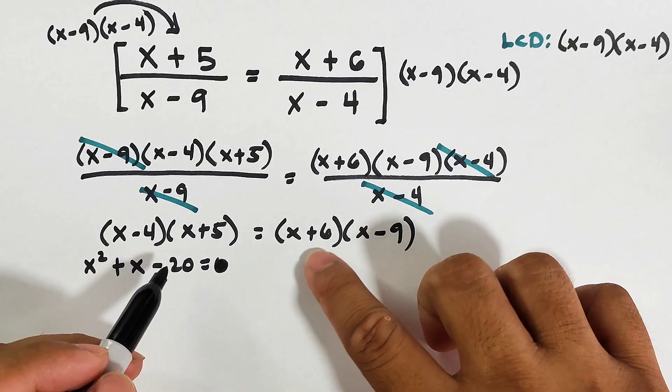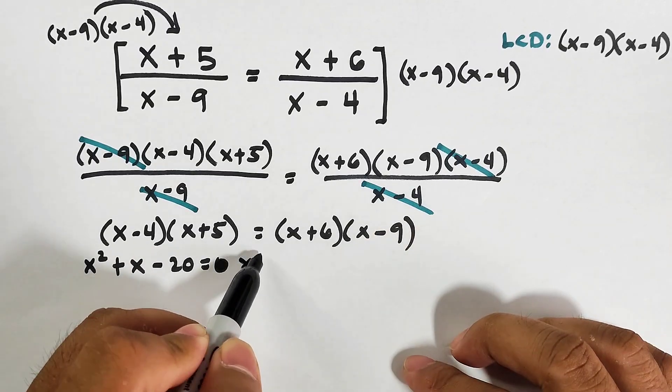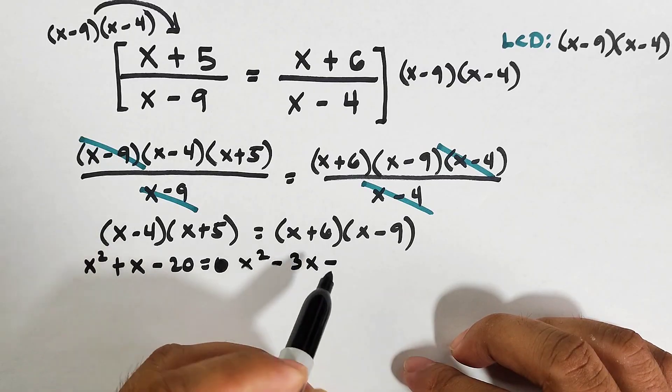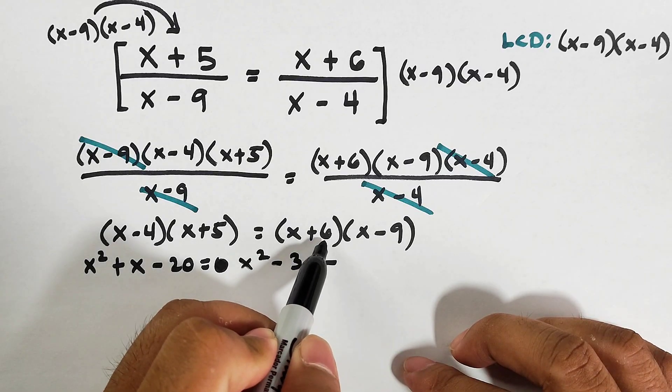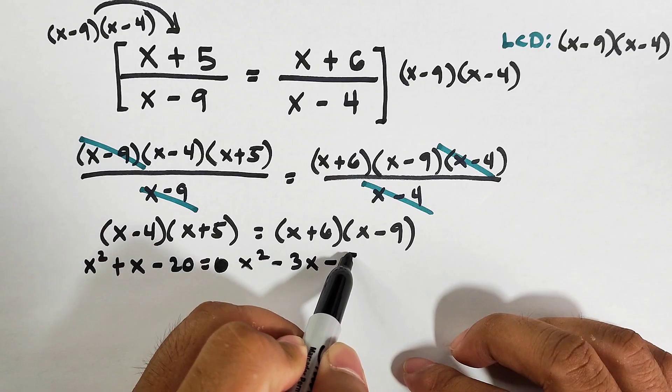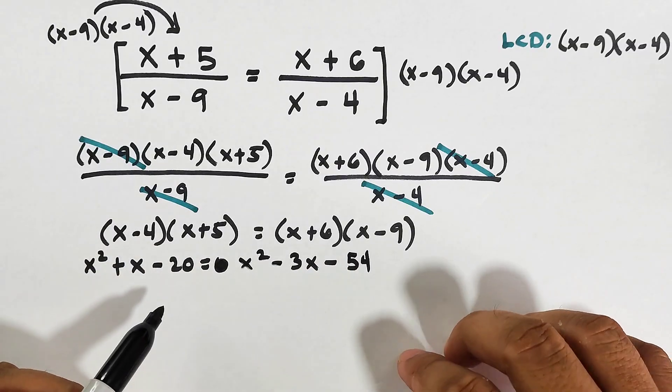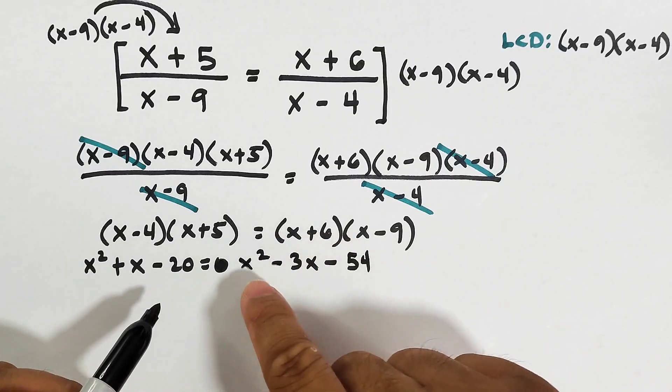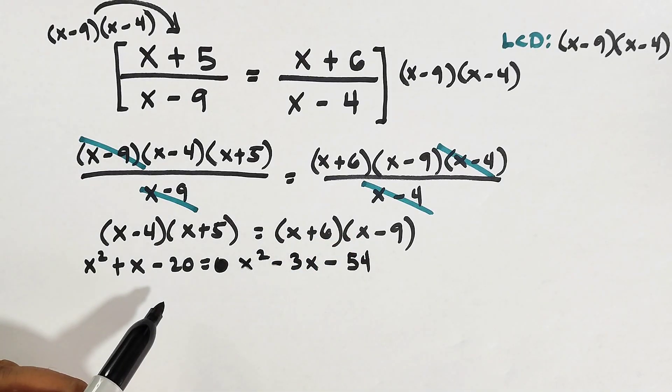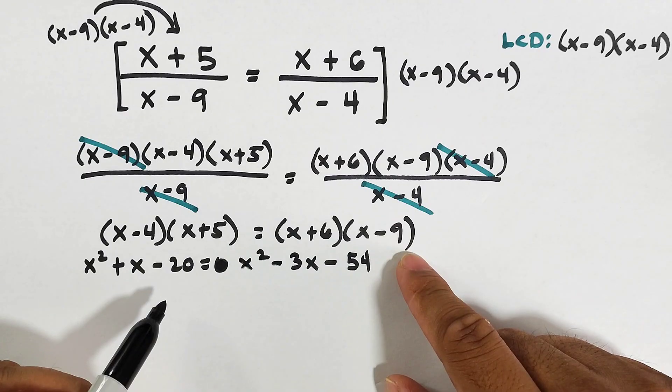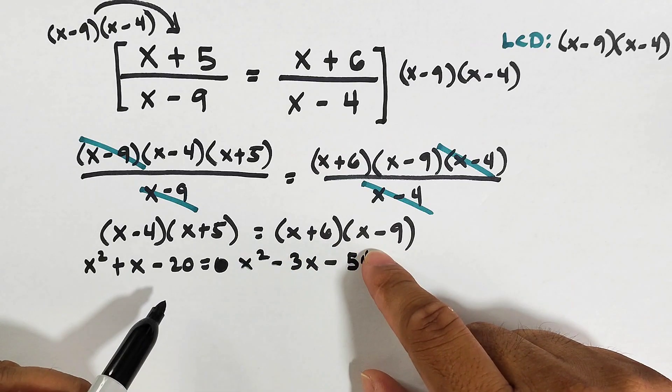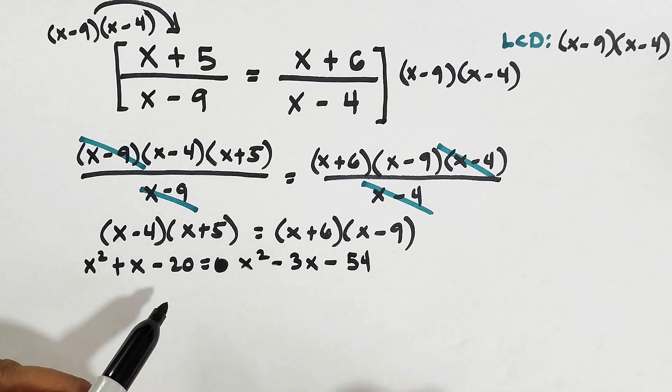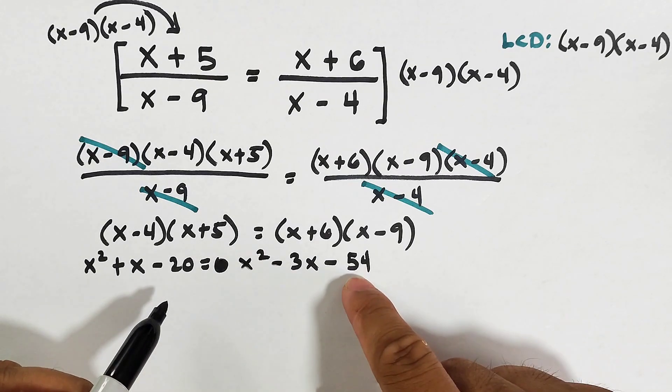Sorry, this is not equal to 0. It's equal to x squared minus 3x minus 54. How? x times x is x squared. x times negative 9 is negative 9x. 6 times x is 6x. So negative 9x plus 6x gives you negative 3x minus 54.